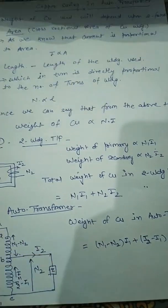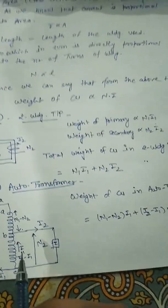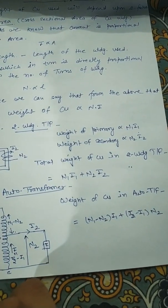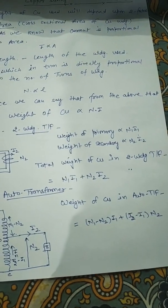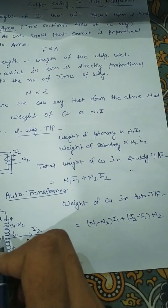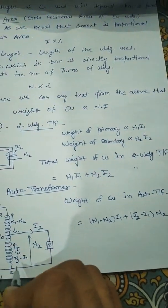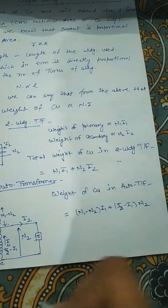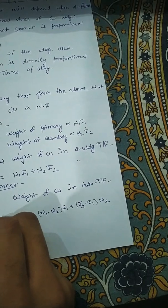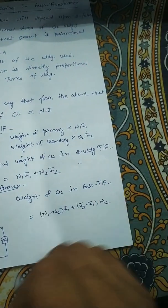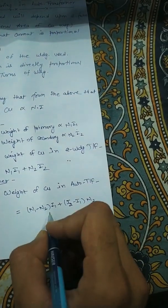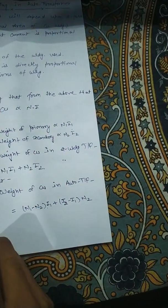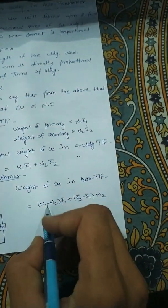Now for the auto transformer — case number two. As you can see from the diagram, this is a step-down auto transformer with n1 primary and n2 secondary turns, and currents i1 and i2. The number of turns in the A-to-B section is n1 minus n2, and by KCL the current in the B-to-C section is i2 minus i1. So the total weight of the auto transformer winding is (n1 − n2)·i1 + n2·(i2 − i1).